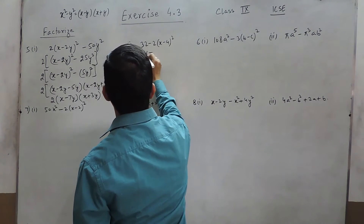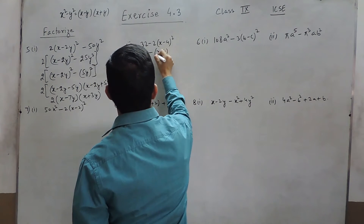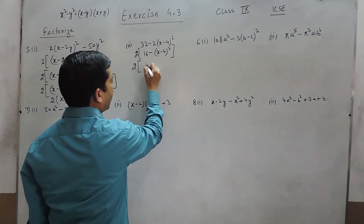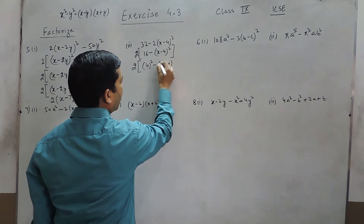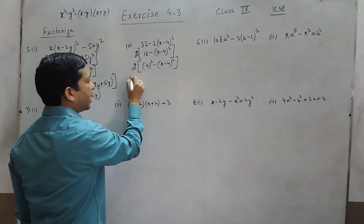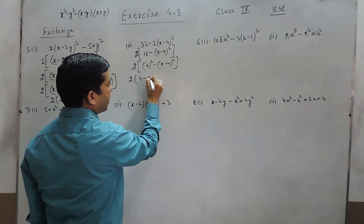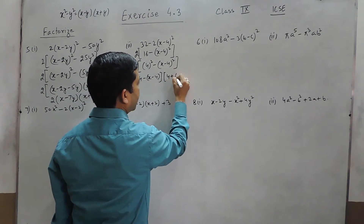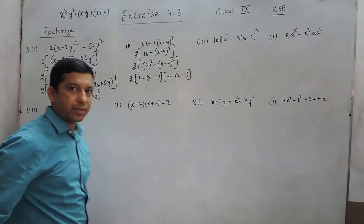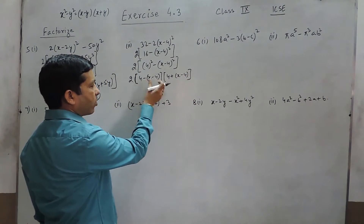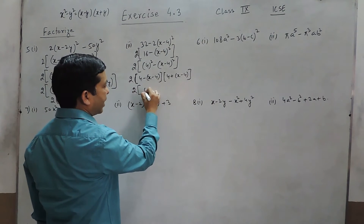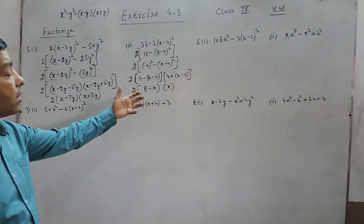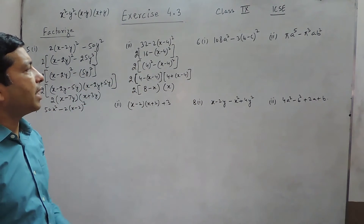Here also we can take 2 as common, so the two terms 16 and (x - 4)² become perfect squares. This can be written as 2 × [(4)² - (x - 4)²], which factors as 2 × (4 - (x-4)) × (4 + (x-4)). We add or subtract the constants, giving us (8 - x) in the first bracket and x in the second bracket.